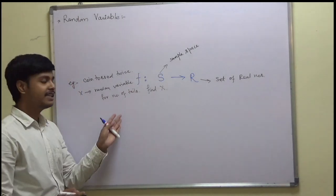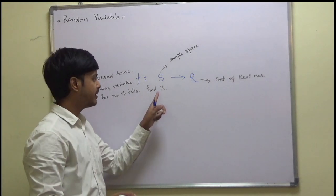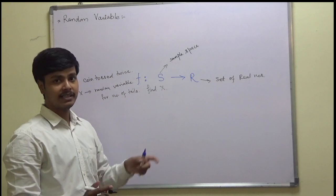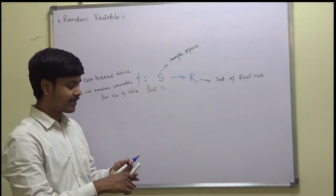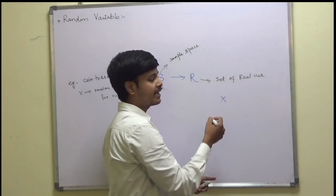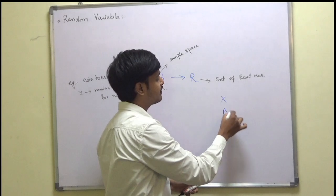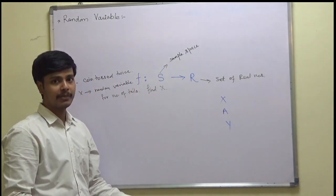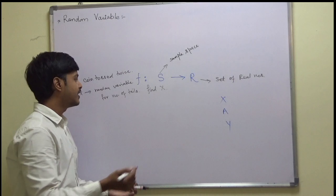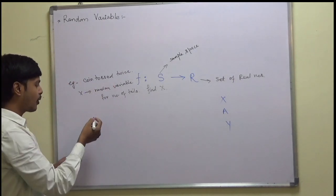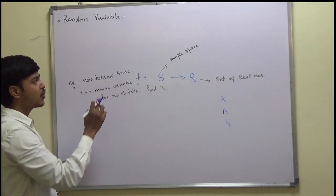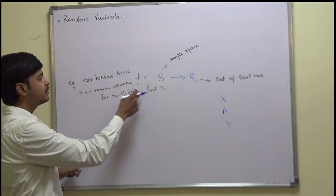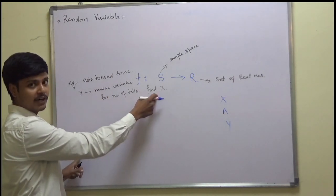Before I take the example, let me make one remark. Random variables are always denoted by capital letters — say X, A, or Y. So it is defined using capital alphabets. Coming back to the problem: a coin is tossed twice, and X is a random variable for the number of tails. We have to find X.